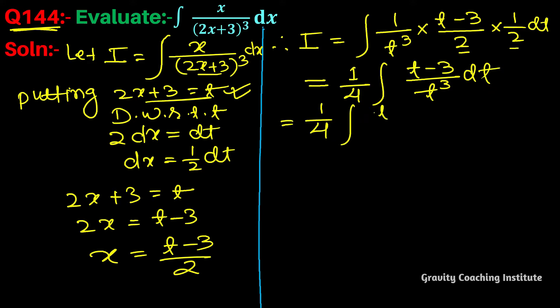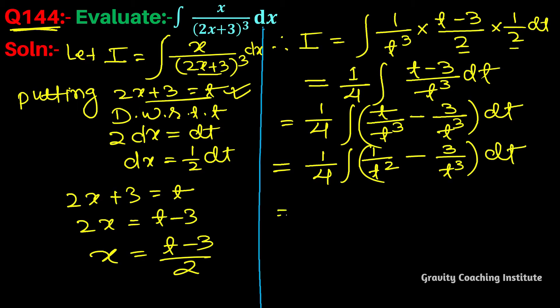This becomes 1/t³ - 3/t³, which we can write as t^(-2) - 3t^(-3).